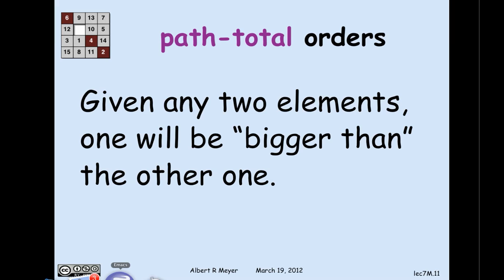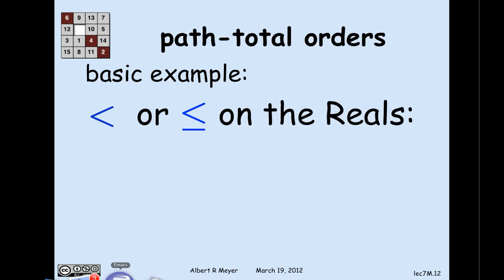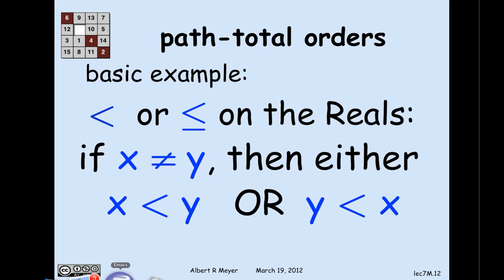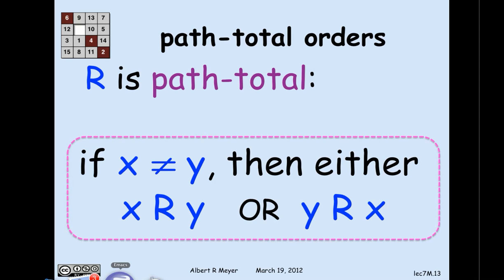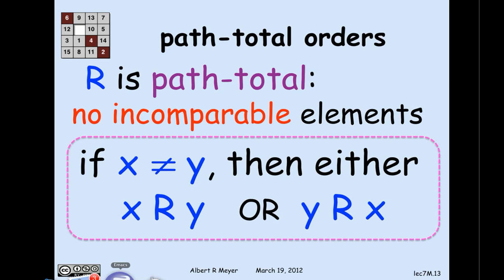Another important property of partial orders is the idea of being path total, or linear, as some authors call it. The definition of path total is that given any two elements, one is going to be bigger than the other with respect to the relation. The most familiar example is the less-than relation on the reals: given any two distinct real numbers x and y, either x is less than y or y is less than x. Formally, if x ≠ y, then either x r y or y r x. This property is called path totality.